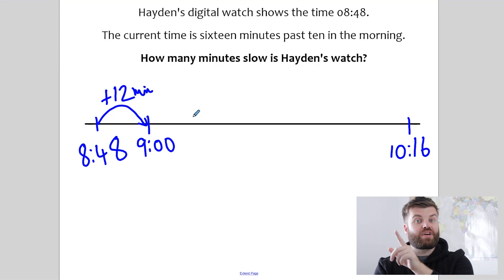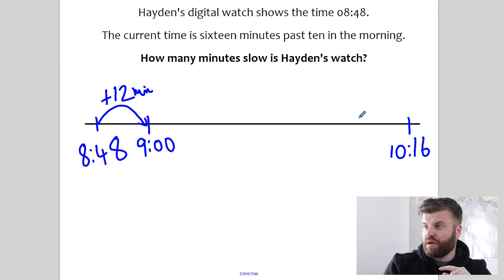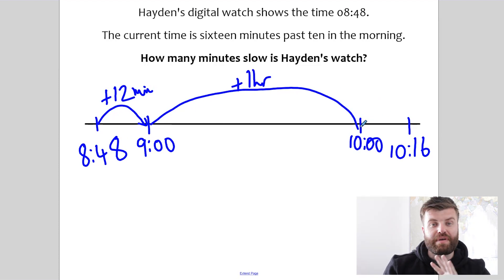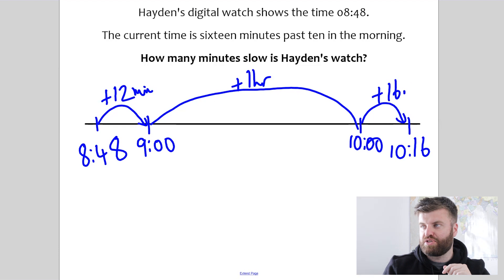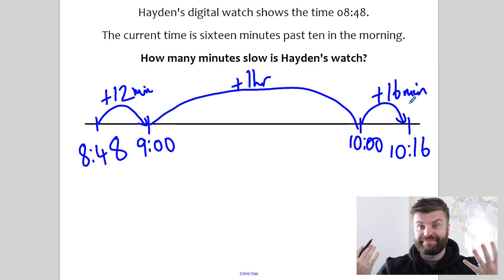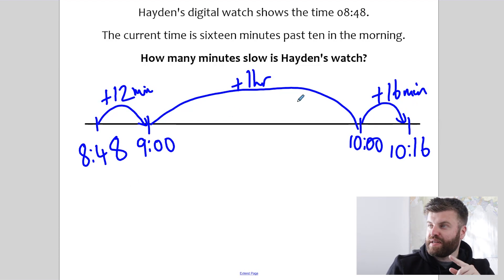Then I'm going to jump to the closest hour to my final time. My final time is 10:16. So I'm going to jump up to 10 o'clock. Luckily for us, that's just one hour. So that's plus one hour in the middle. And then the last jump is always super easy because we go from O'clock here, 10 o'clock, to something past. So it's really simple to read off. That's a 16 minute jump. The final step once you have all of the jumps is quite simple. Add them together. So we've got 12 minutes and 16 minutes. That's 28 minutes. And we've got one hour.